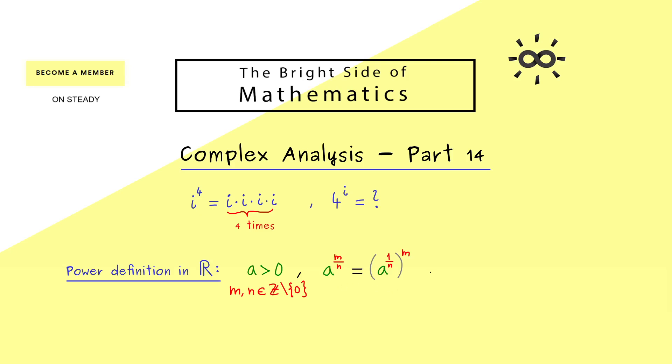However, now we can use a very nice trick - namely, we can use the exponential function exp and the logarithm. We first put our positive number into the logarithm and then the result into the exponential function. Because the logarithm is the inverse of the exponential function, we don't change anything here.